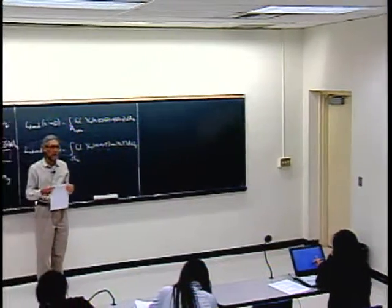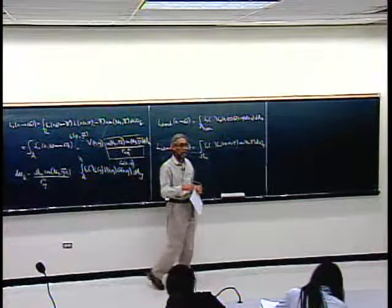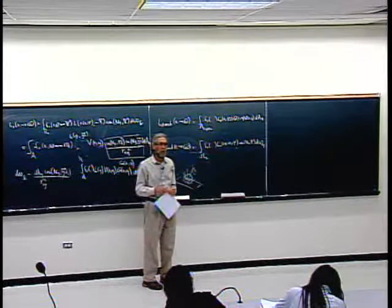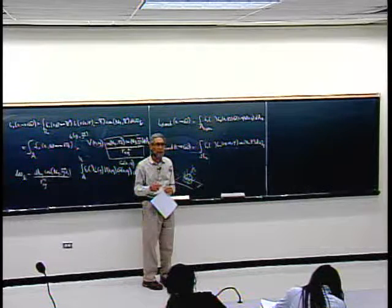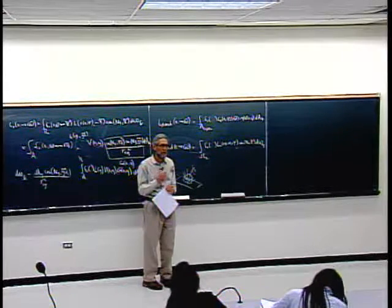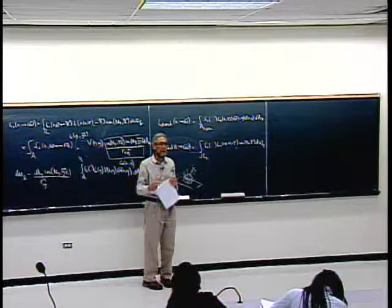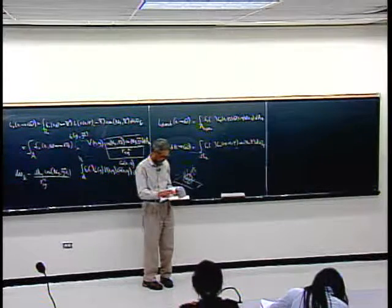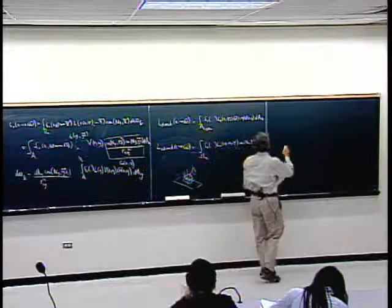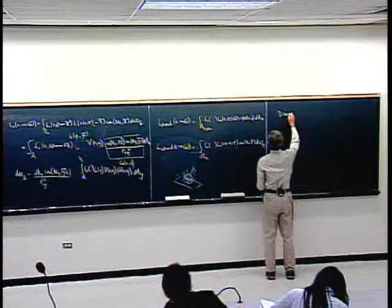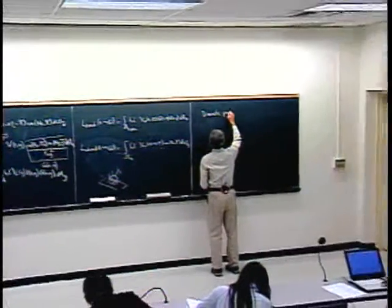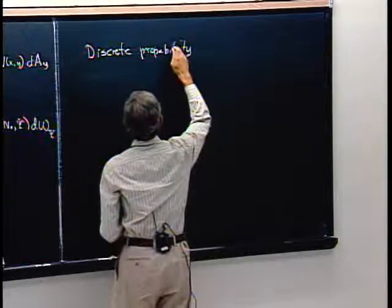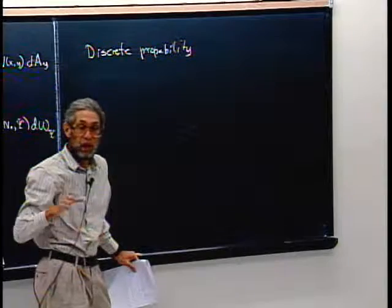For the assignment after next you'll be sampling lights and sampling the global illumination environment. What I want to start talking about today and next time is the mathematics of how to compute an integral by sampling — it's based on probability theory. So I'm going to start with an introduction to probability theory. First we'll talk about discrete probabilities, when we have only a finite number of events.